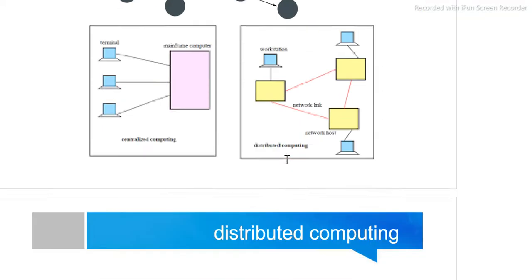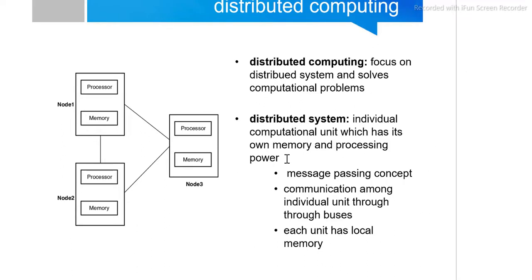In the next slide, we can see a clear picture of the distributed computing environment. There are three nodes — node 1, node 2, node 3 — all connected with each other, all autonomous. They each have their own processor and their own memory, and they communicate with each other internally.